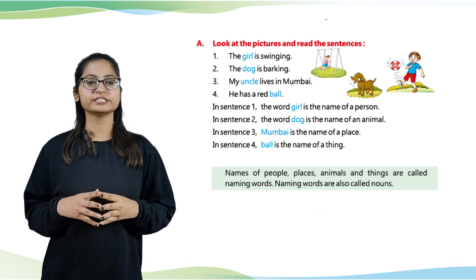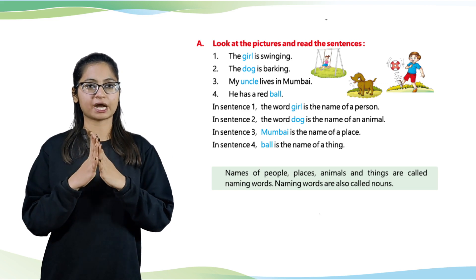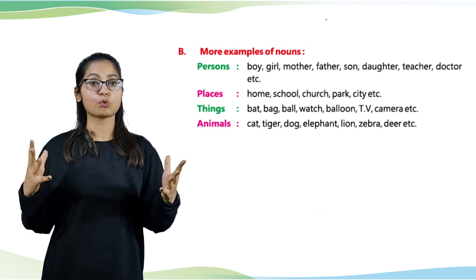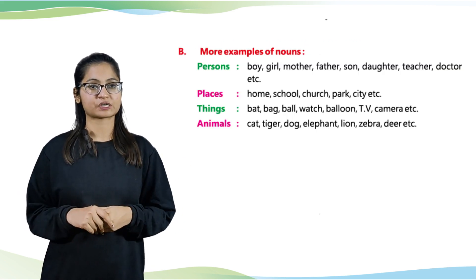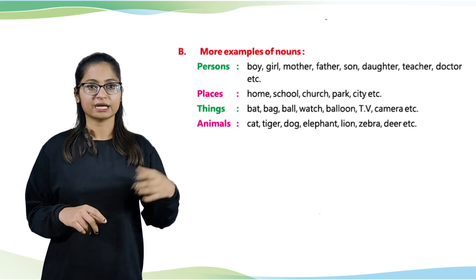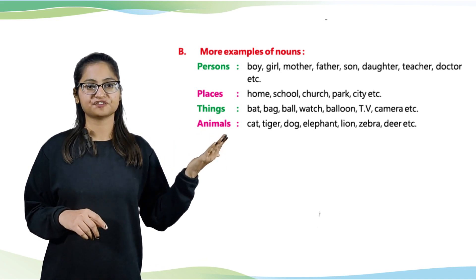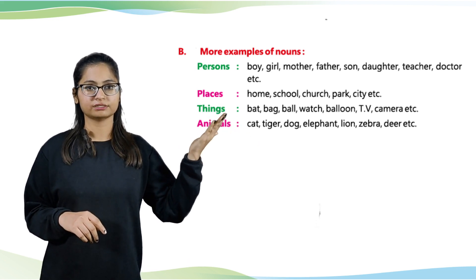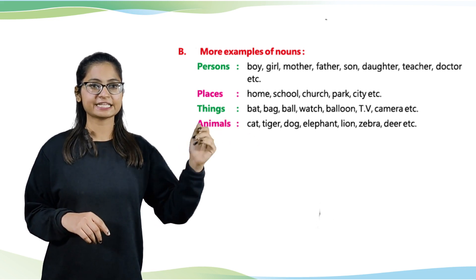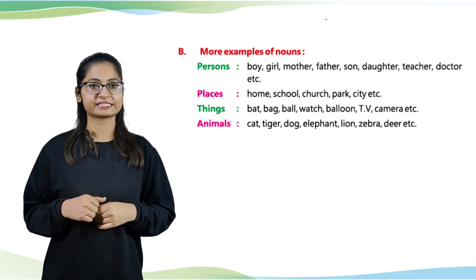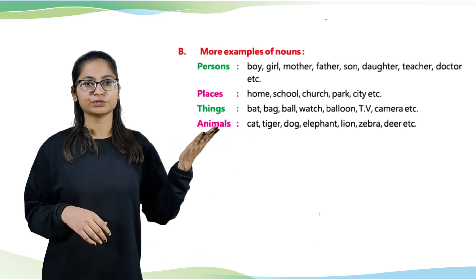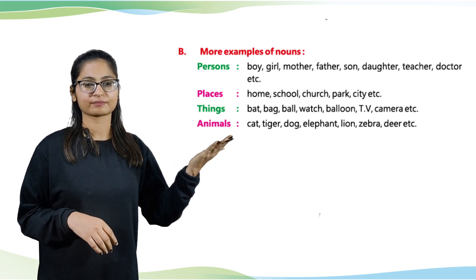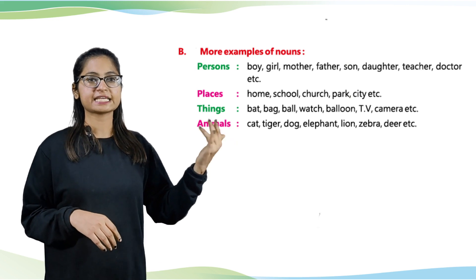Okay students, moving down. Let's read part B. Now we have more examples of nouns. Person: boy, girl, mother, father, son, daughter, teacher, doctor, etc. Places: home, school, church, park, city, etc.